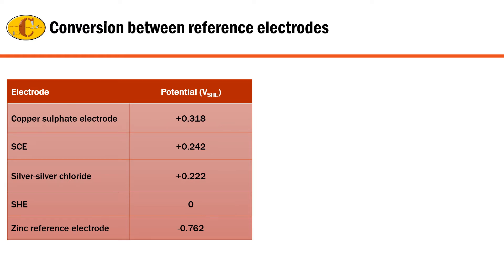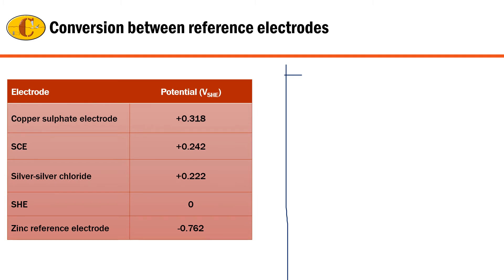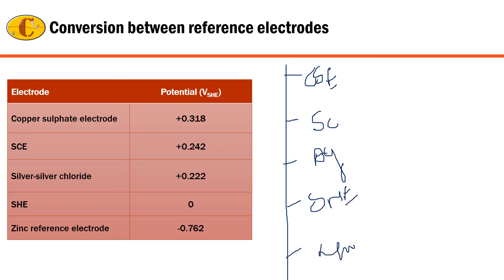Now how do we go about it? Consider these reference electrodes to be along a road — a road of potential. Copper-copper sulfate is over here at 318. Then it is calomel, then we come to silver-silver chloride, then to the standard hydrogen electrode, and then zinc. So these are different stops on the same road.